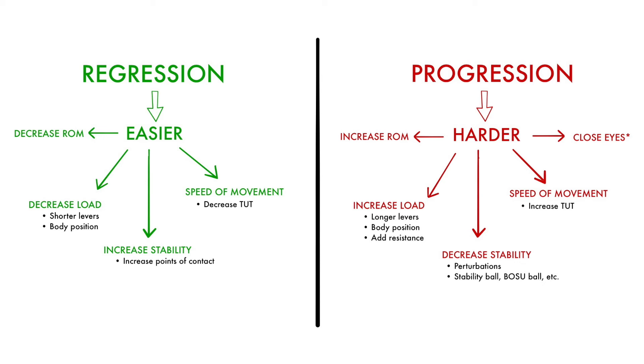Variables that influence these changes are load, range of motion, speed, and body position. When applying these variables to core exercises, you can regress an exercise by decreasing the range of motion, using shorter levers, increasing points of contact, or decreasing time under tension.